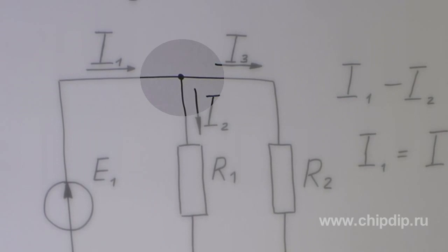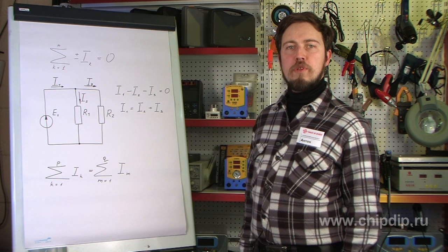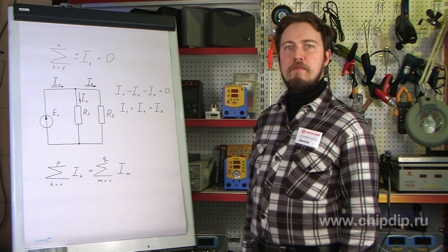That is, an electric circuit node is a connection point of three amps and more. We assume positive current if it flows into the node and negative current if it flows out.